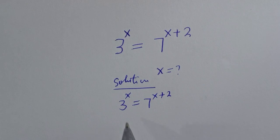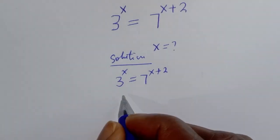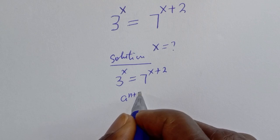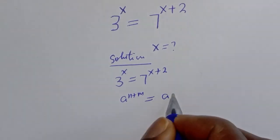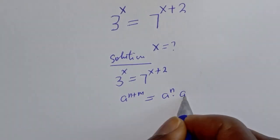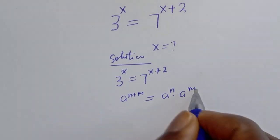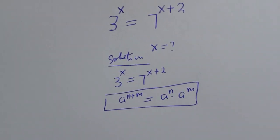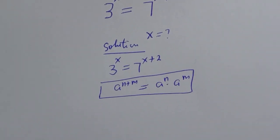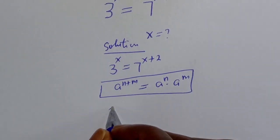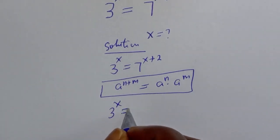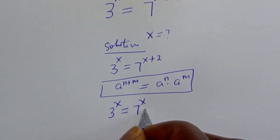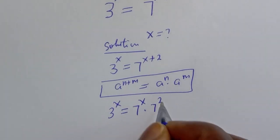Take note of this exponential rule: if you have a raised to power n plus m, this is equal to a raised to power n multiplied by a raised to power m. Then this can be written as 3 raised to power s is equal to 7 raised to power s multiplied by 7 raised to power 2.